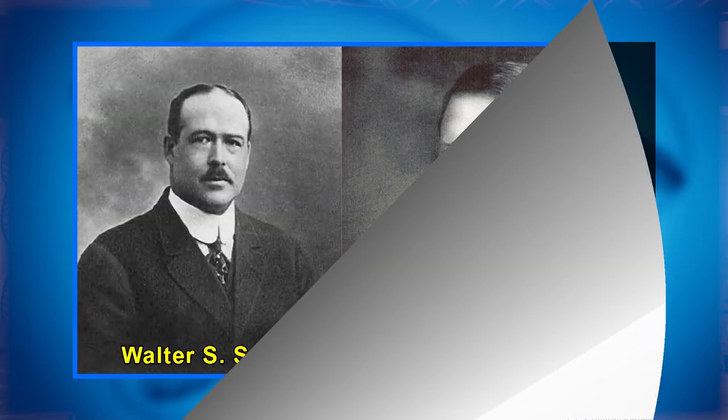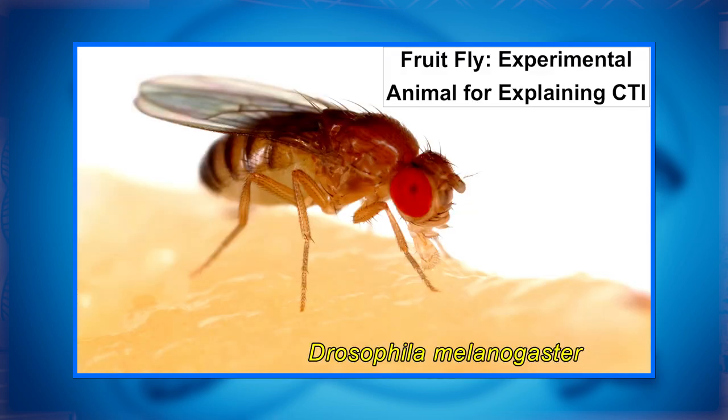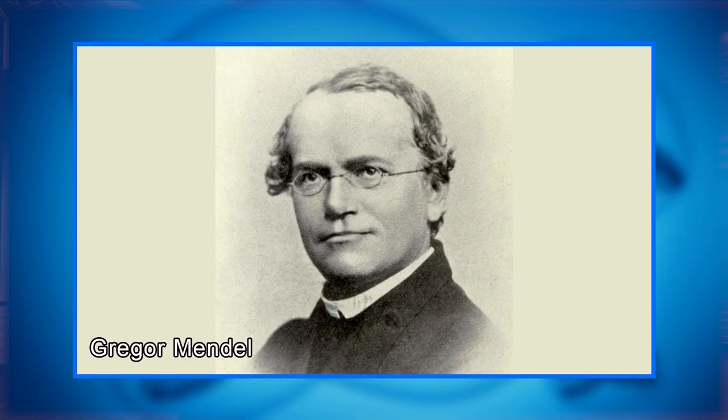The idea of a connection between chromosomes and heredity was subsequently strengthened by research conducted by Theodore Bowery and Walter Sutton. But direct evidence in support of chromosome theory didn't come until Thomas Hunt Morgan's experiments with fruit flies, that is Drosophila, at the dawn of the 20th century. Thus, after nearly 50 years of speculation, scientists were finally able to confirm what they had long suspected — that chromosomes were indeed the physical carriers of hereditary information.